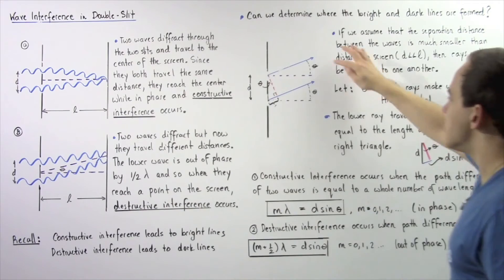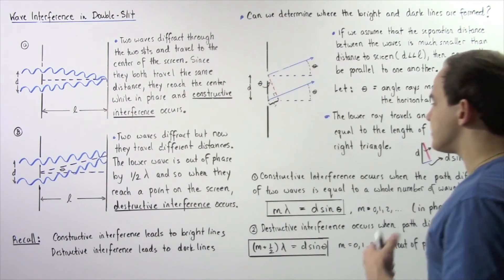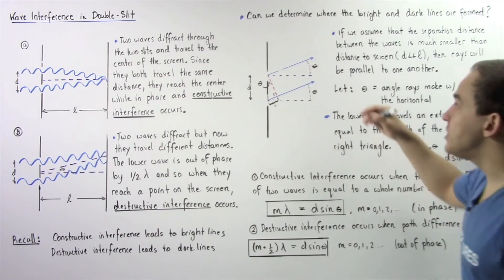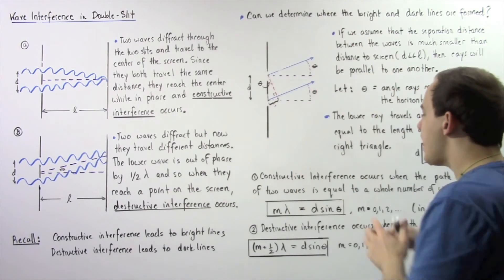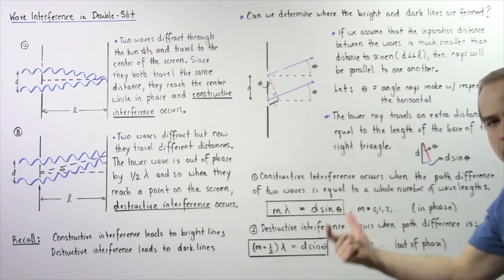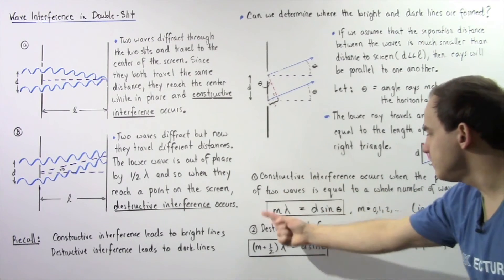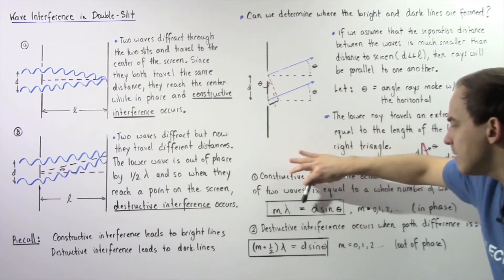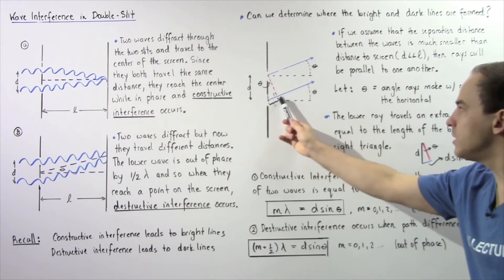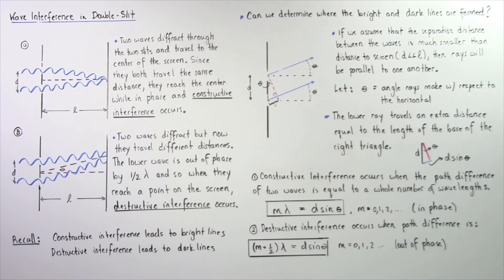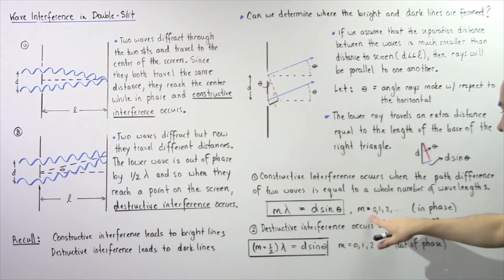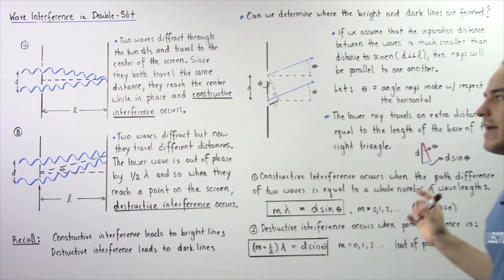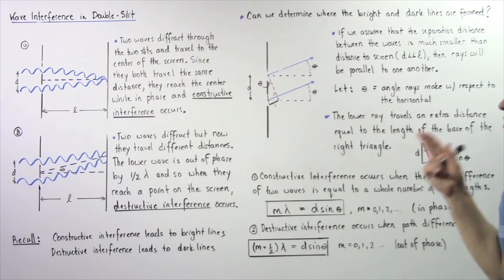where d is the separation distance and theta is the angle the rays make with respect to the horizontal. Constructive interference takes place when the path difference between the two waves equals a whole number of the wavelength. This gives us the equation: m multiplied by lambda equals d multiplied by sine theta, where m is a whole number — 0, 1, 2, 3, and so on. This equation means our two waves are in phase, leading to constructive interference.